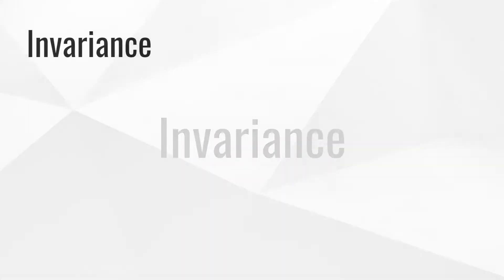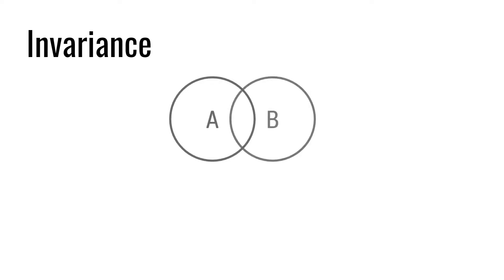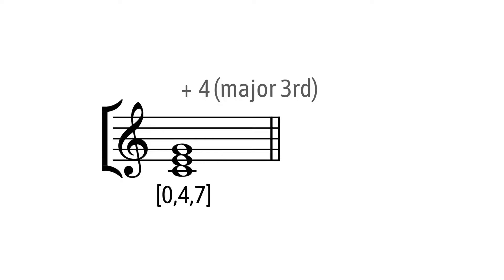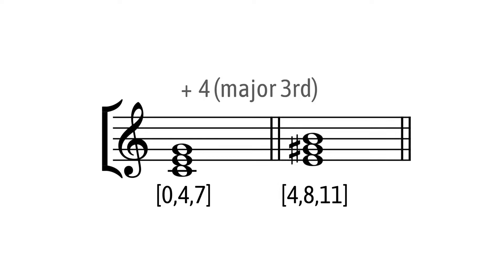Another important concept is called invariance. Given two PC sets A and B, a third PC set C can be constructed with those elements that are present in both A and B. In mathematical set theory, this is known as the intersection of A and B. The elements of this set are then known as invariants, and are of special importance in music, their main function being to provide harmonic continuity. Invariance occurs when a set is subjected to a transposition, or inversion, or both, and makes reference to the elements of the initial state of the set that remain constant after those operations. For example, if set {0, 4, 7} is transposed by a value of 4, a major third, we obtain {4, 8, 11}. The invariant in this example is PC 4, E.